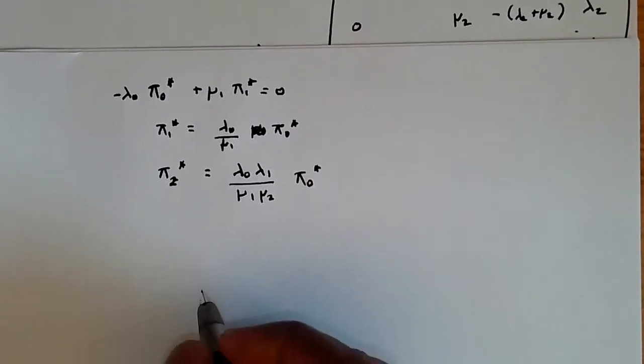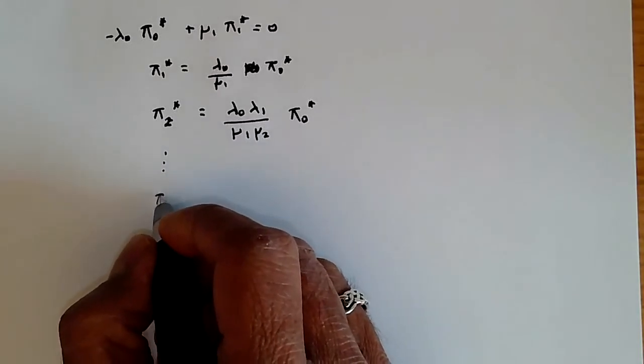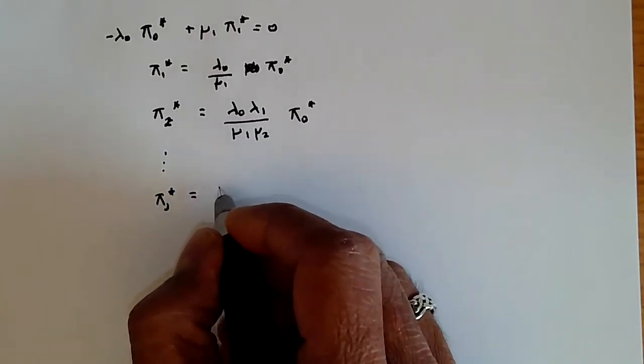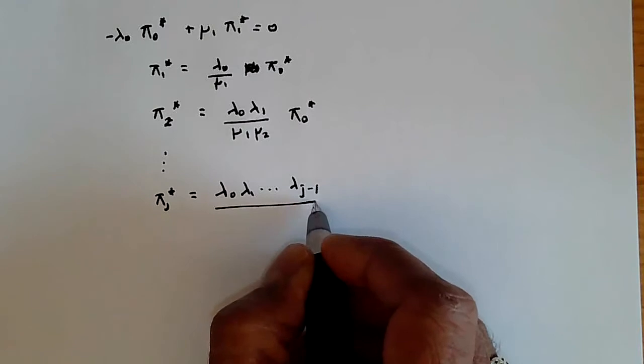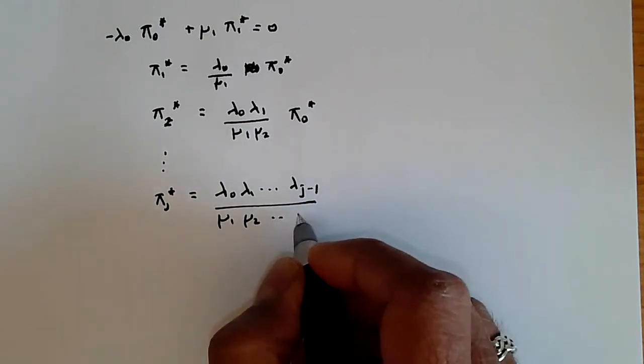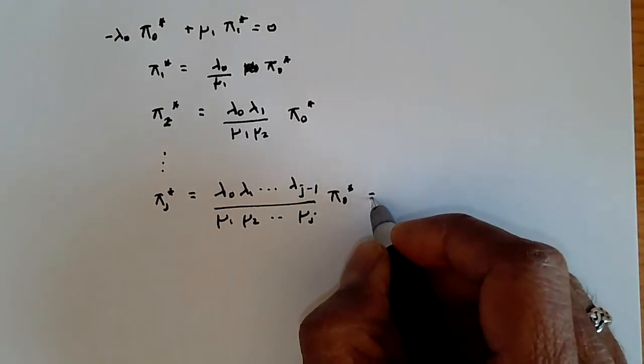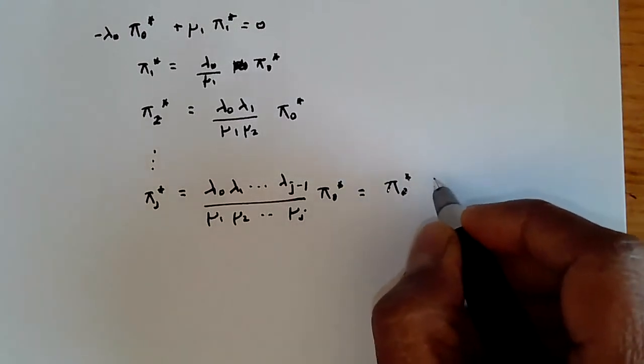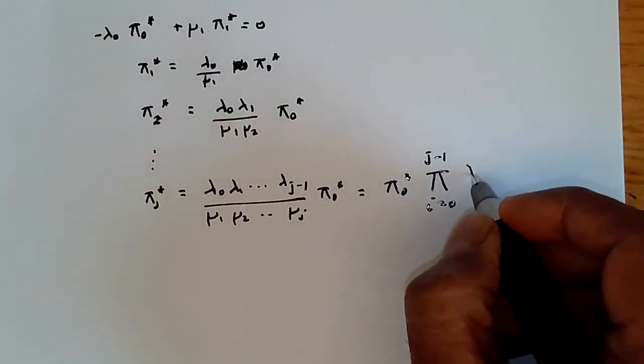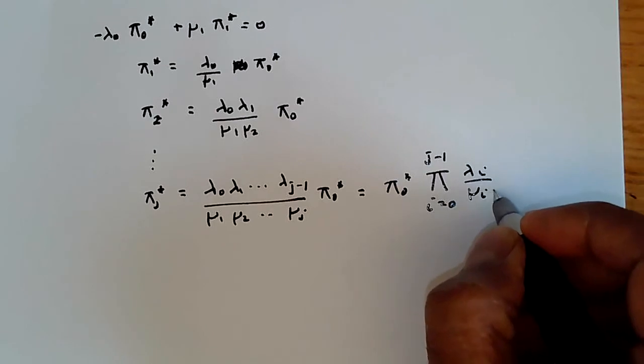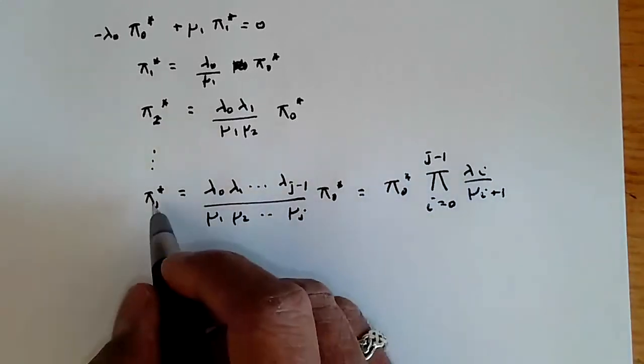Generally speaking, πⱼ* is going to be λ₀λ₁ all the way up to λⱼ₋₁ over μ₁μ₂ all the way up to μⱼ times π₀*. And you can represent this as π₀* times the product from i=0 to j-1 of λᵢ/μᵢ₊₁. So this is the general form for πⱼ*.